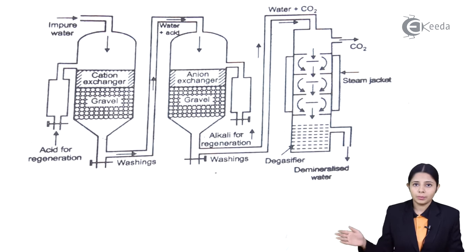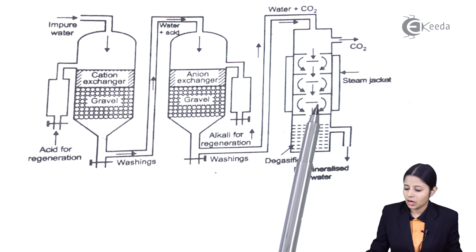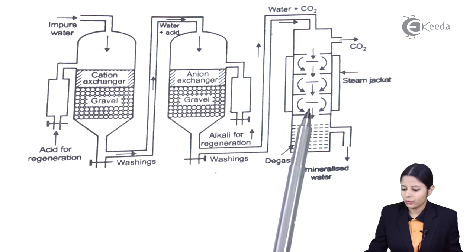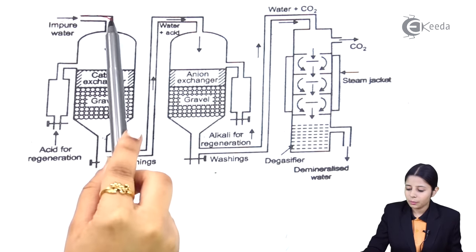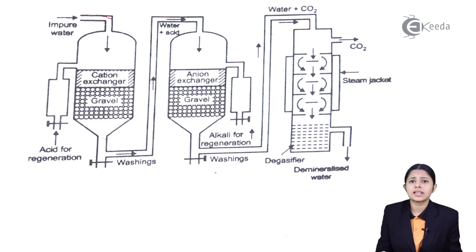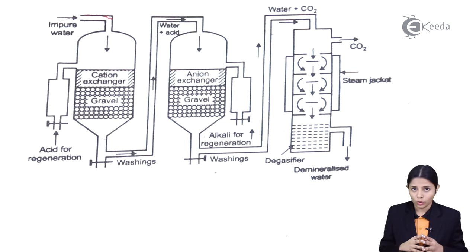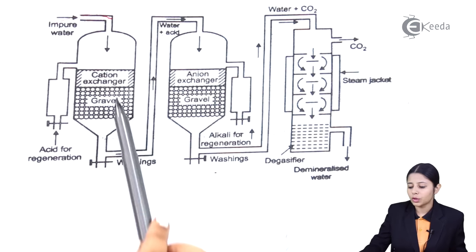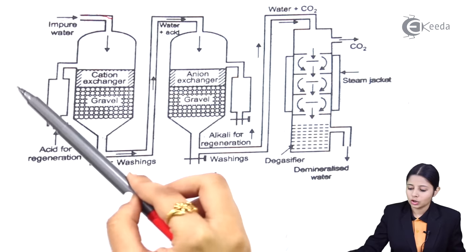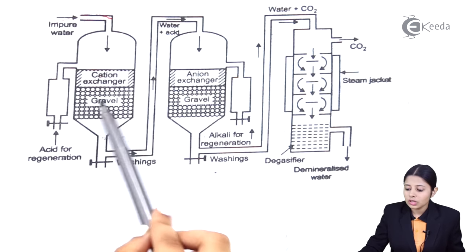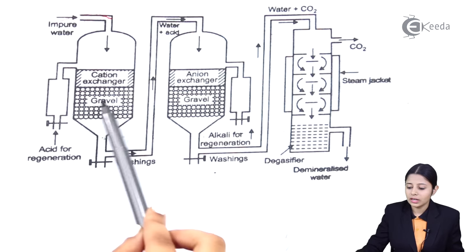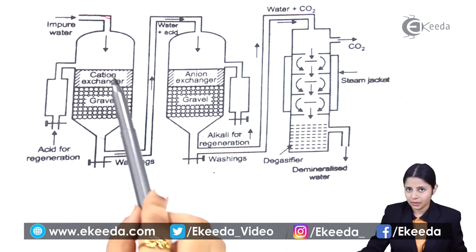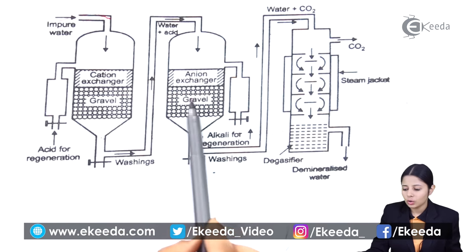Let us see the exact process with the help of a diagram. As explained, we have three towers: the first is the cation exchanger, the second is the anion exchanger, and the third is the de-gasifier. The impure water is first passed into the cation exchanger. Both towers contain gravel — gravel is added to slow down the flow of water, so the water doesn't flow directly from top to bottom but drips slowly, giving enough time for the cation and anion exchange reactions to take place properly.